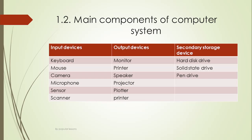The main components of a computer system include three parts: input devices, output devices, and secondary storage devices. Examples of input devices are keyboard, mouse, camera, microphone, sensor, and scanner. Output devices include monitor, printer, speaker, projector, and plotter. Secondary storage devices include hard disk, solid state drive, and optical drives.